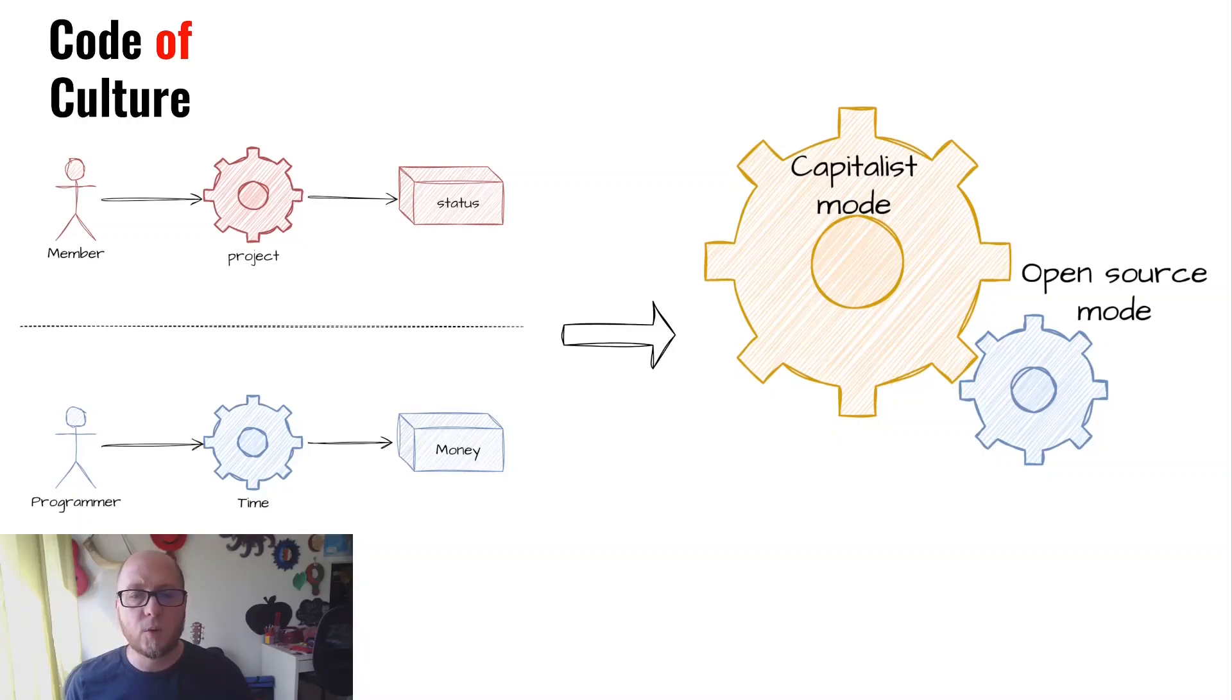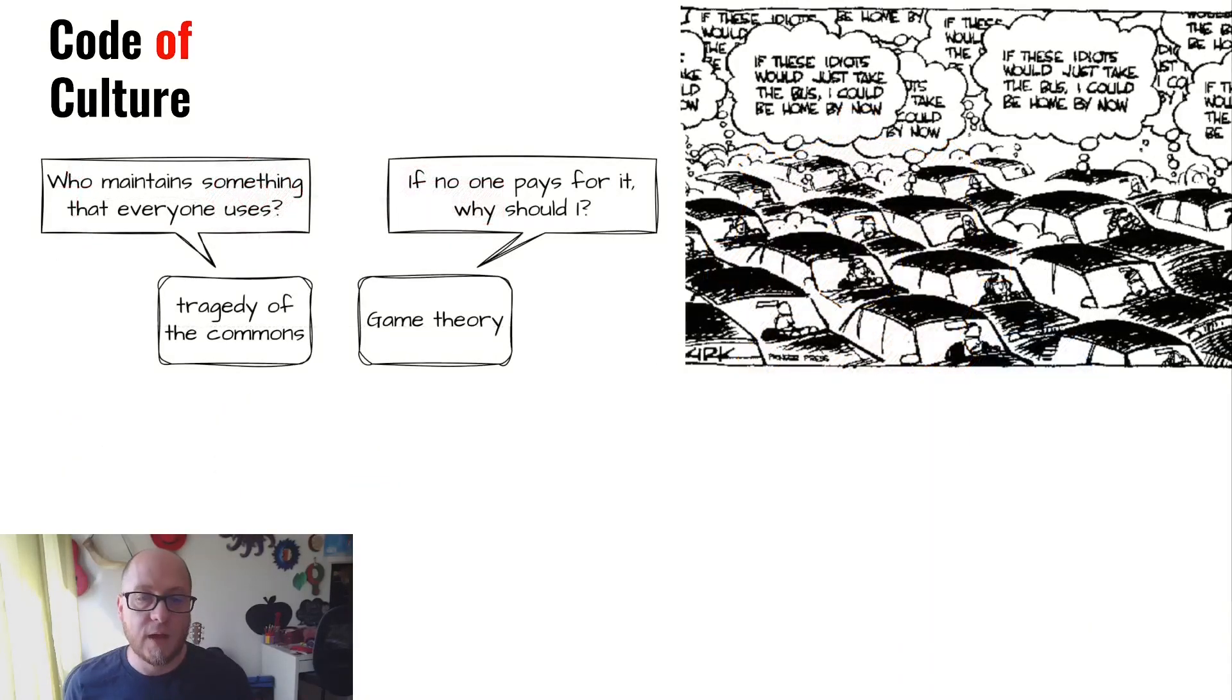In conclusion, we see that the capitalist mode of production is using the open source mode of production to its advantage while also starving and relying on the goodwill and free time of most maintainers in the wild. This tension between the two modes is reflected also in the tragedy of the commons and game theory. The tragedy of the commons refers to the idea that individuals acting in their own self-interest can collectively deplete a shared resource, even if it will affect all of them in the long term. In the context of open source, this means that companies may take advantage of open source software without contributing back to the community, ultimately hurting the long-term sustainability of the project and discouraging newcomers to enter the open source.